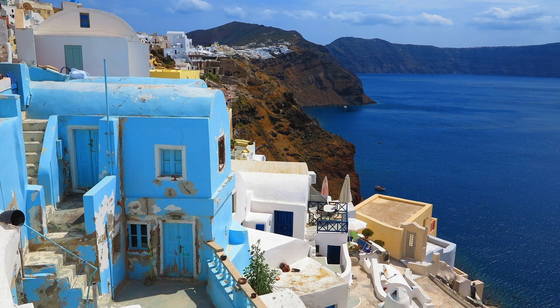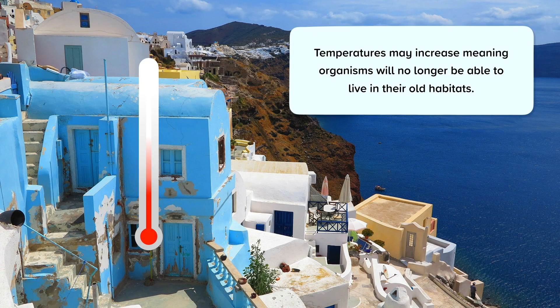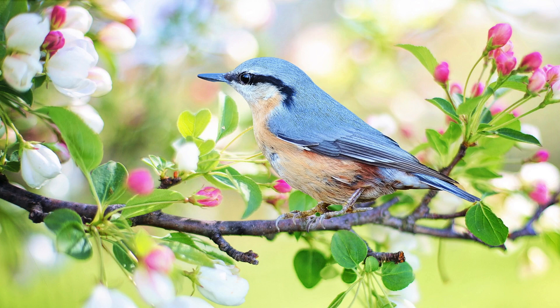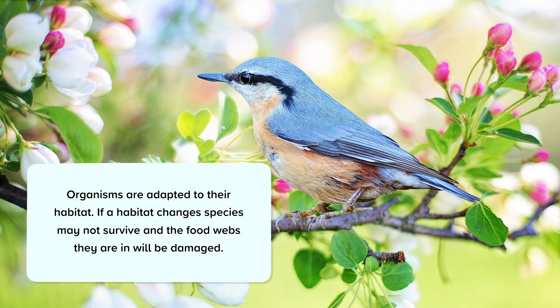Areas on Earth may become significantly hotter, meaning that organisms will no longer be able to live there in the same way. Organisms are highly adapted to their habitats — if a habitat changes, a species may not survive. This could affect the associated food webs in a habitat. For example, if the plant producing seed for a bird can no longer grow well, the bird may struggle to survive. And if there are fewer of that bird, predators that depend on that bird may suffer too. There could be wide ramifications to damage to food webs due to global warming.